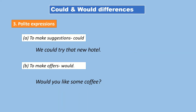The third difference involves polite expressions. To make suggestions, we use 'could.' For example: 'We could try that new hotel' — here we are making a suggestion. But to make offers, we use 'would.' For example: 'Would you like some coffee?' — here we are offering coffee to someone.